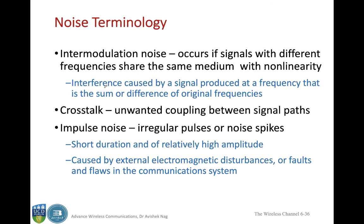Intermodulation noise occurs when signals with different frequencies share the same medium with non-linearity. Crosstalk is the unwanted coupling between signal paths. Impulse noise consists of irregular pulses or noise spikes of short duration and relatively high amplitude, caused by external electromagnetic disturbances such as lightning or thunder.